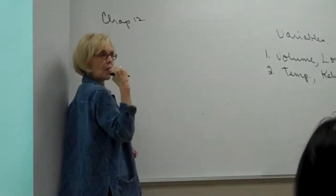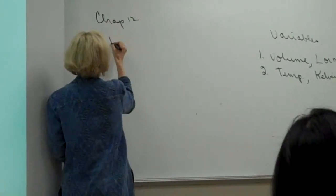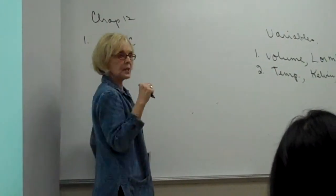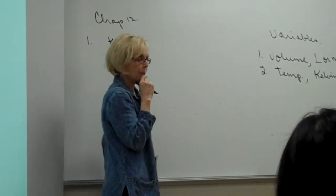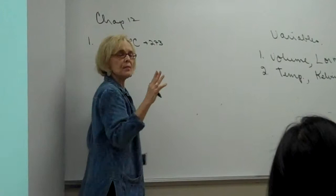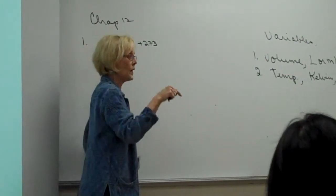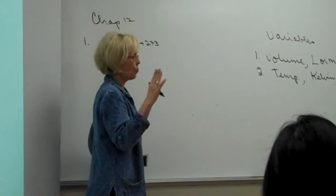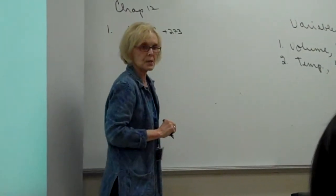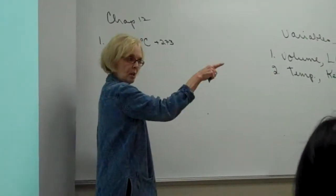Let me just keep a running list over here — things to know. First thing to know: Kelvin is equal to Celsius. That equation we had in Chapter 1 was 273. And 273 is good enough; your book has 273.15, but we don't need that many significant figures. So make it a little bit easier on yourself. Every time we work gas laws, think Kelvin.